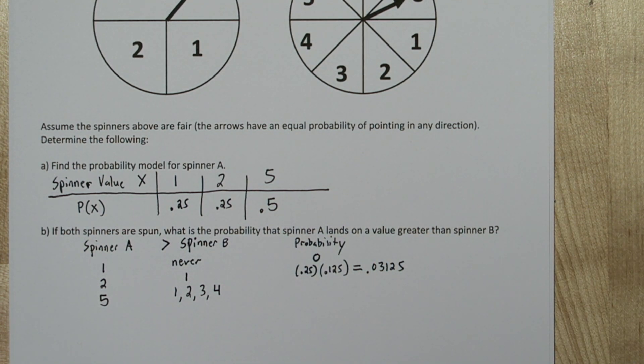Now if spinner A lands on the number 5, there's 4 values spinner B could land on that would have spinner A still be greater than it: the numbers 1, 2, 3, and 4.